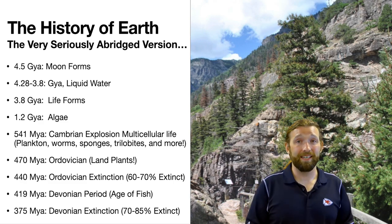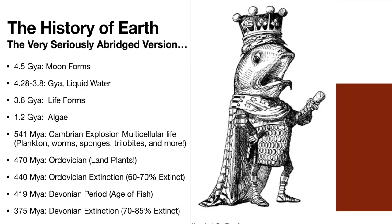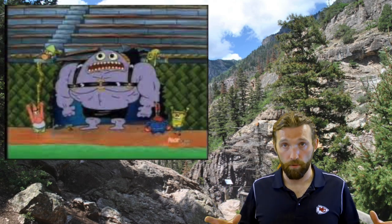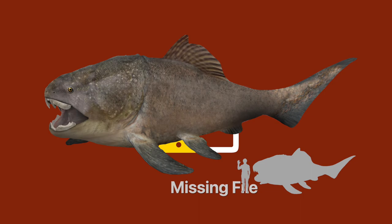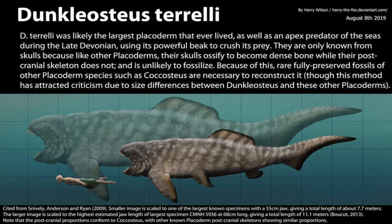Moving forward, 419 million years ago we are in the Devonian period, known as the Age of Fish. Fish had already evolved but this is where they take off and dominate the oceans. We had all sorts of interesting creatures — Dunkleosteus, a giant armor-plated fish about the size of a car with bone-plated armor, that went around and munched on things. We actually have fossils of this in the University of Kansas Natural History Museum. It was the big baddie of its time.